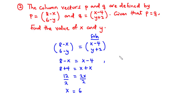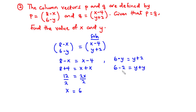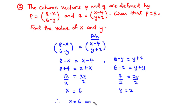For the Y components, we have 6 - y = y + 2. Transposing, we get 6 - 2 = y + y, so 4 = 2y. Dividing through by 2, y = 2. Therefore, x = 6 and y = 2.